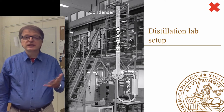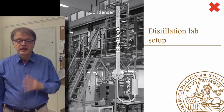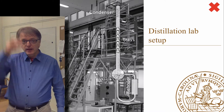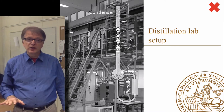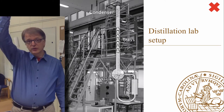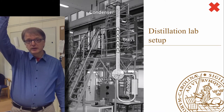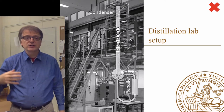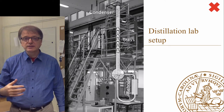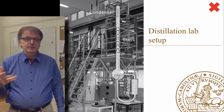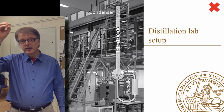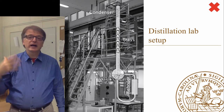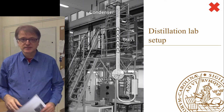This is a quick introduction to the distillation lab. The setup looks like this: a distillation column with a reboiler down below and a condenser up top, and inside the column is a certain number of physical trays — contraptions that increase the contact between the boiling liquid and the condensing gas.